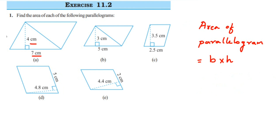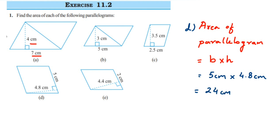For problem D, base is 5 centimeters and height is 4.8 centimeters. Multiplying 5 × 4.8 gives 24, so the area is 24 centimeter square.